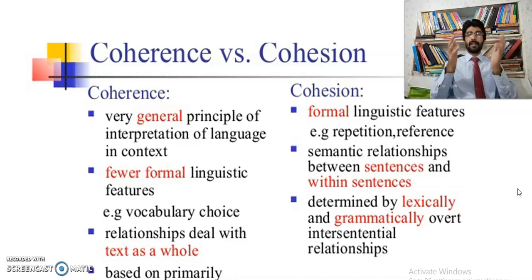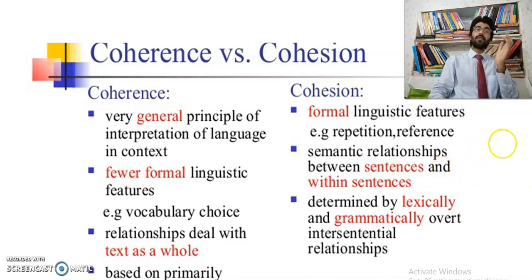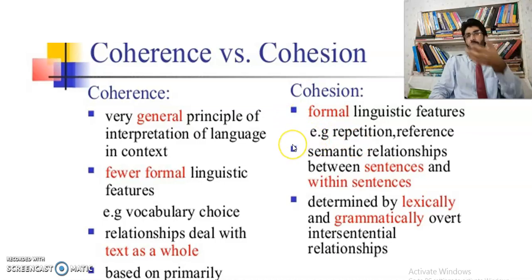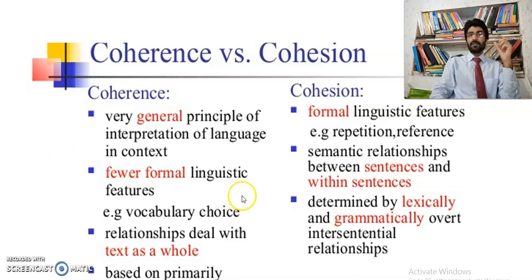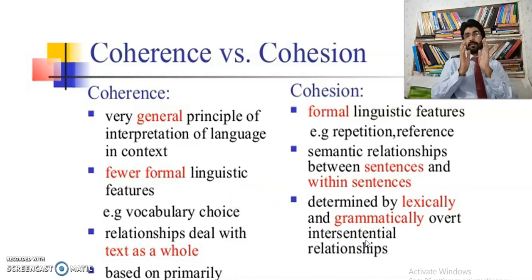Remember that words have tone — words have feelings. Through words we describe feelings. Some words used in pathetic situations may not be used in pleasant situations. So in this context, fewer formal linguistic features are included in coherence. By using sad words you are telling about your coherence — that you are sad, that something bad happened. Through vocabulary choice you are telling about yourself. So to some extent, coherence is involved with linguistic features.